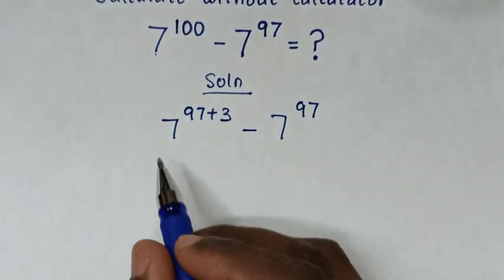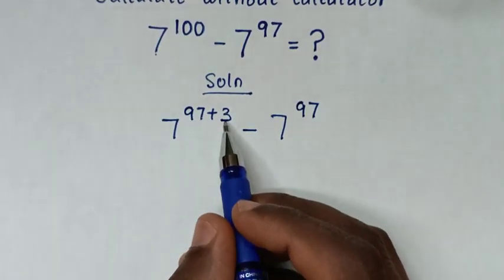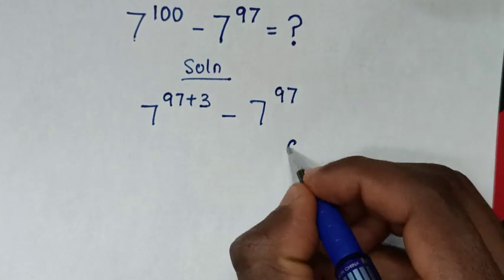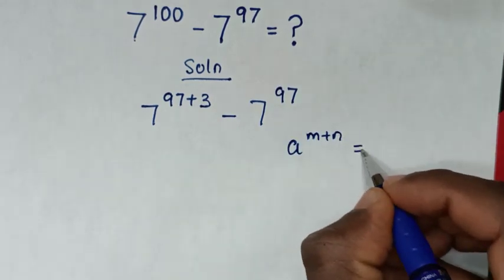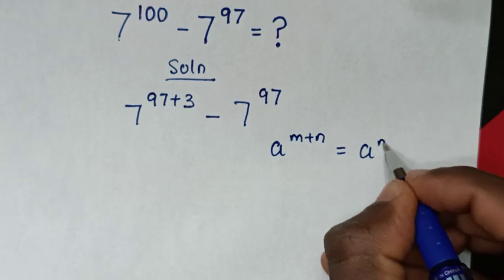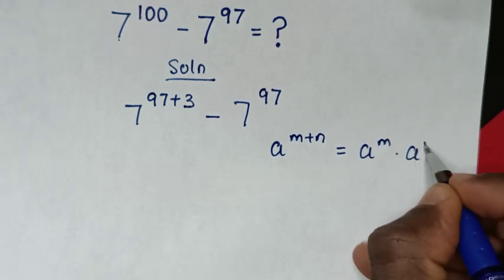Then in next step, from here 7 power of 97 plus 3 is in the form of A power of M plus N is equal to A power of M times A power of N.